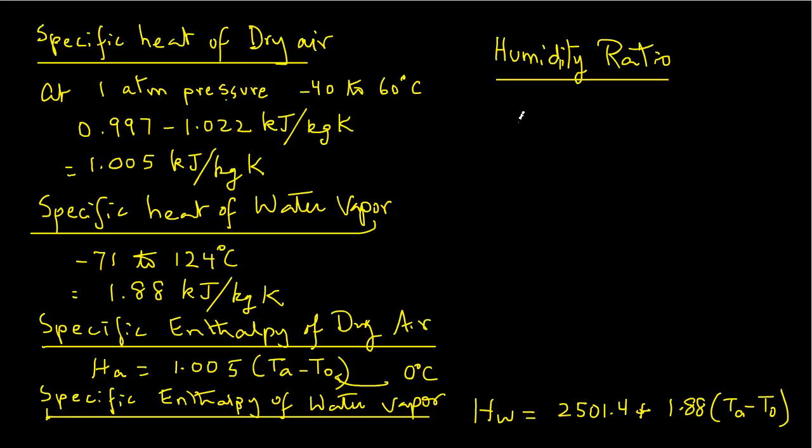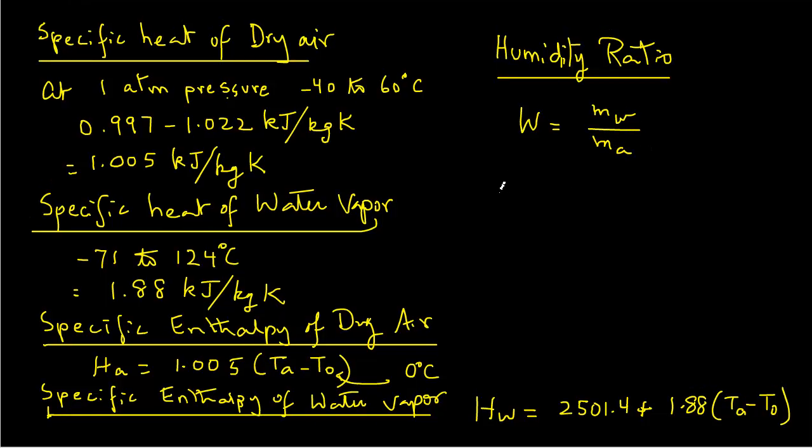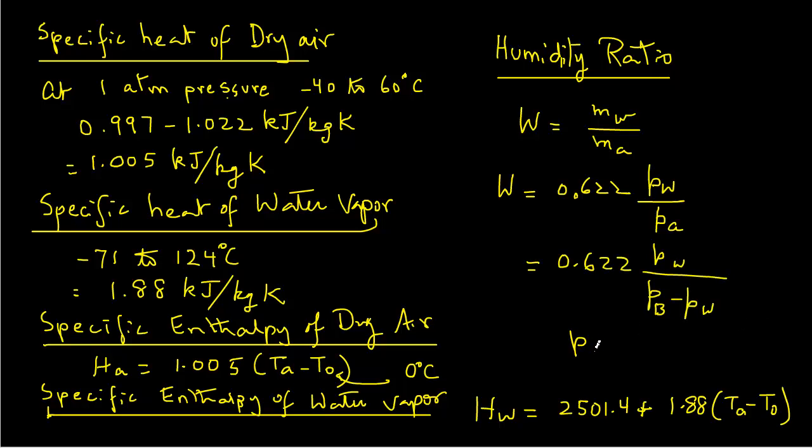Humidity ratio is defined as the mass of water vapor per unit mass of dry air, where W, the symbol for humidity ratio, equals MW over MA. M is the mass, and this can also be written as W equals 0.622 partial pressure of water divided by partial pressure of dry air, and that can also be written as 0.622 PW over PB minus PW. Note that from Dalton's law, we know that PB equals PW plus PA, so we can write for PA, PB minus PW.